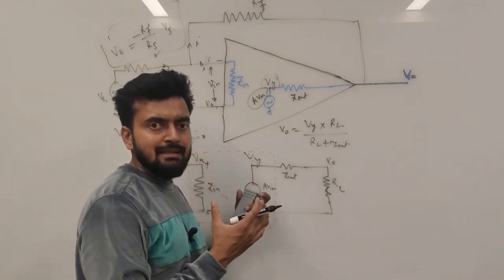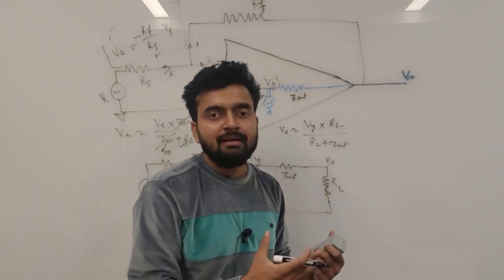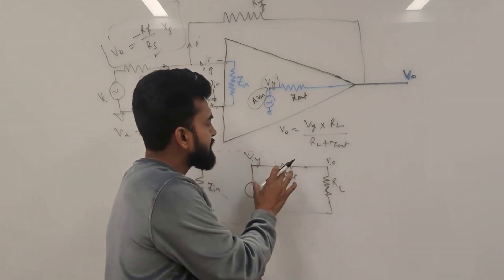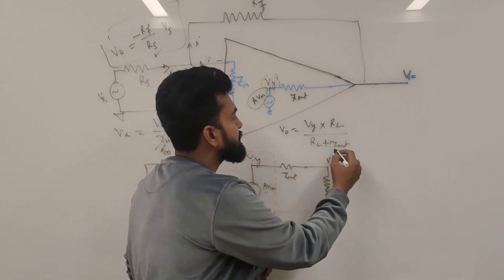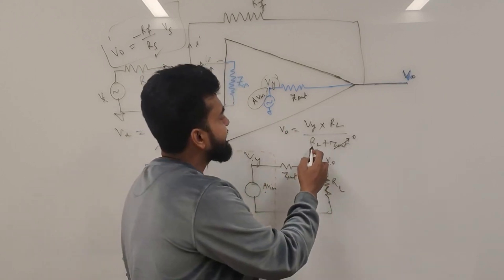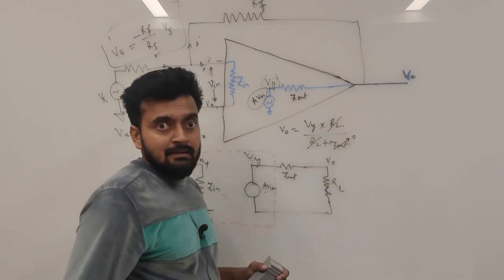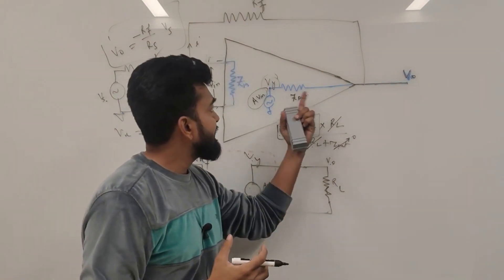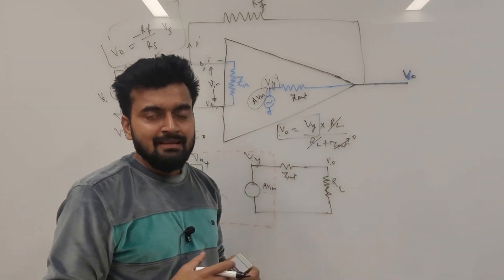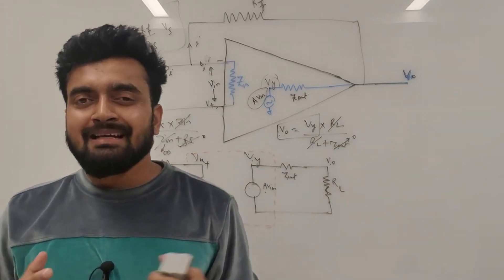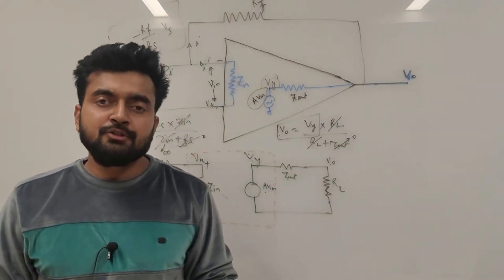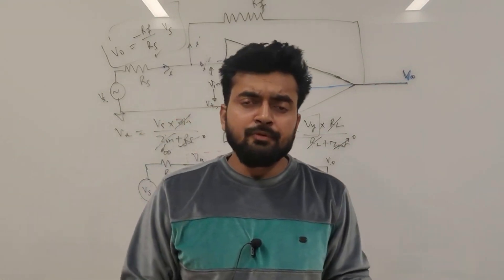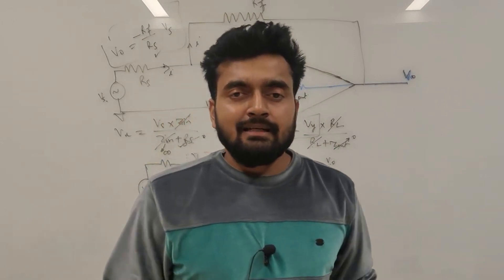To have the output equal to Vy, we do not want to lose any signal. If we amplify by a factor of two, we want the output to be amplified by exactly that factor without distortion. Therefore, if Zout is zero or negligibly small, RL is much greater than Zout, and RL cancels — so Voutput equals Vy. That's why the input impedance of an op-amp should be ideally infinite and the output impedance should be zero for proper amplification. That's it for today's video — hope you found this information insightful.